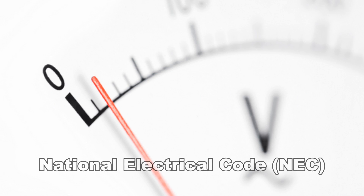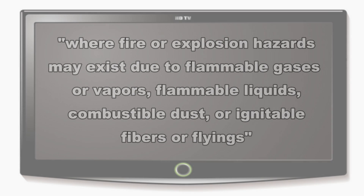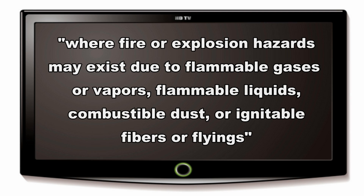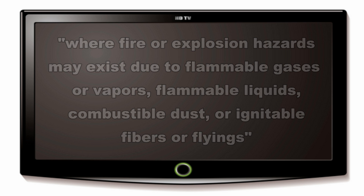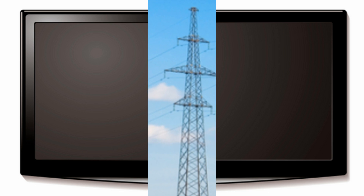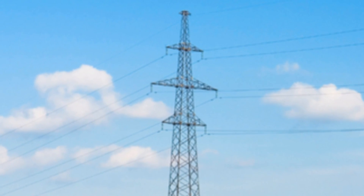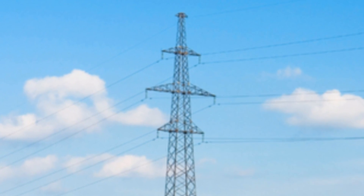The National Electrical Code, or NEC, defines hazardous locations as those areas where fire or explosion hazards may exist due to flammable gases or vapors, flammable liquids, combustible dust, or ignitable fibers or flyings. According to the NEC, there are three types of hazardous locations.